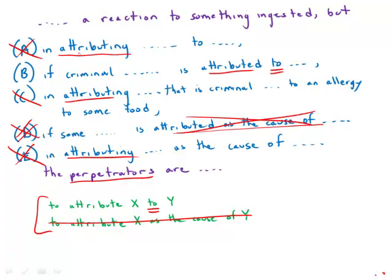Now answer choice B, I'll point out, is not ideal. It has this phrase 'an allergy to some food', and it would be briefer to say 'some food allergy'. So notice that the correct answer is not always the best, most perfect, most ideal answer. It is just the best of the five. And here B is very clearly the strongest of the five answer choices.